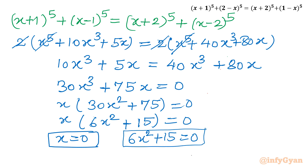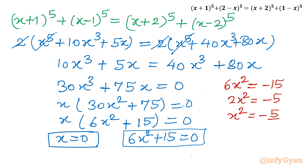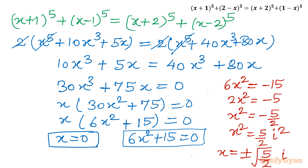Solving 6x^2 + 15 = 0: we get 6x^2 = -15, then dividing by 3 gives 2x^2 = -5, so x^2 = -5/2. Since x^2 is negative, the solutions are complex. Writing -1 as i^2, we take square roots of both sides to get x = ±√(5/2) · i, giving a complex pair of solutions.